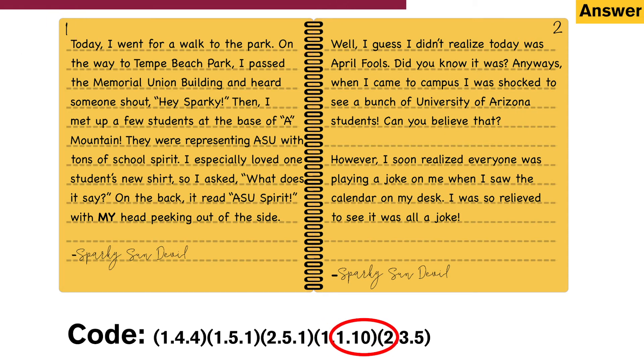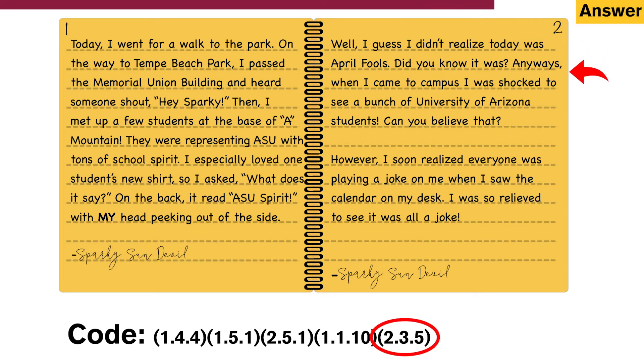Now the final code, 235: second page, third line, fifth word — campus.